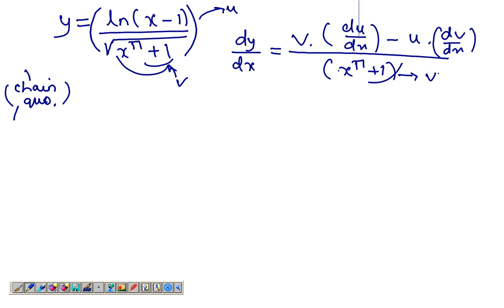The quotient rule, this is v squared, right? So let's just put these values. v would be nothing but root x to the pi plus 1, du over dx. That means you differentiate, you start from the outside and you apply the chain rule.